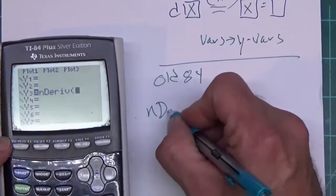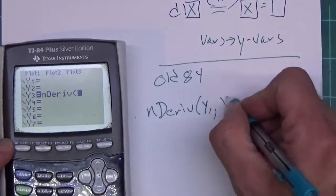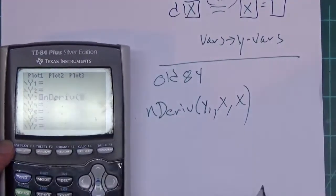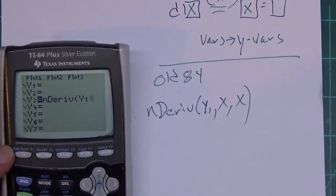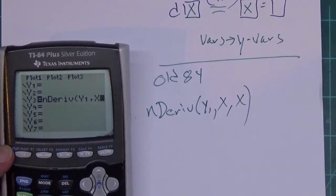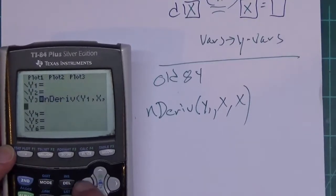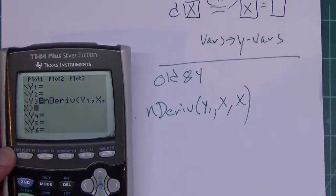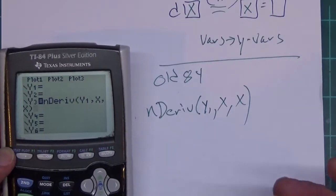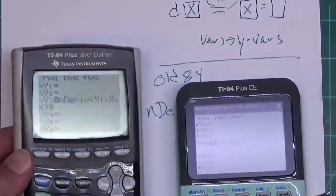In here we're going to have nDeriv and what I need to do is put y1, comma x, comma x. You already know how to get the y1 - you press vars over to y vars, press enter twice. The commas right above the 7, so you hit comma x, comma x. I hate it when you push the wrong button. Comma x, close parenthesis. Okay, now that's typed in the calculator this way.